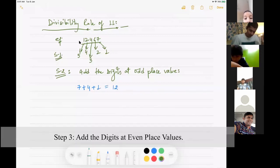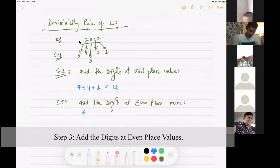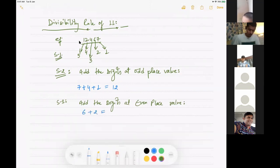Step 3 is add the digits at even place values. We will add the digits at number 2, which is 6, plus number 4, which is 2, right? So it is 8.